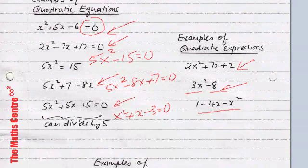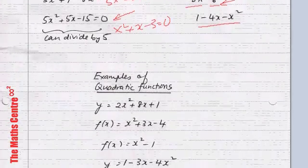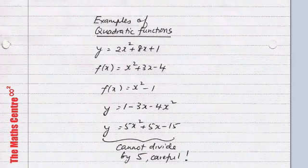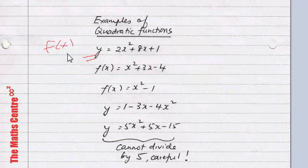Now let's move on to quadratic functions. You will see things like y equals to 2x squared plus 8x plus 1. Or you might see this written as f of x equals to 2x squared plus 8x plus 1. Whether you see it as y equals or as f of x equals, they all mean the same thing — they all refer to a quadratic function.